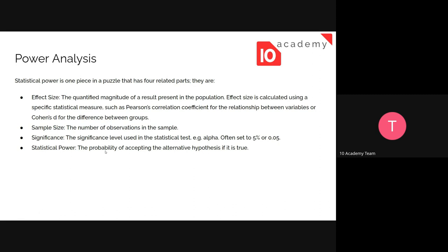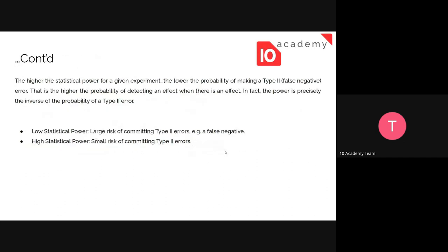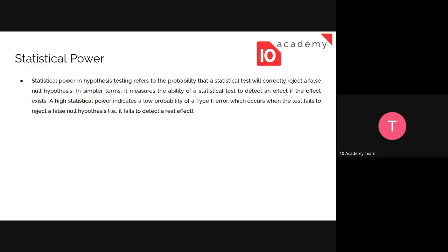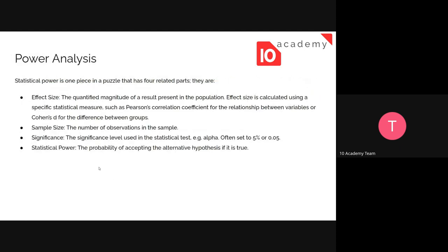Statistical power is the probability of accepting the alternative hypothesis if it is true — or in other terms, it refers to the probability that a statistical test will correctly reject a false null hypothesis. Those two descriptions are the same idea, just in different terms. At the end of the day, the point is to calculate a significant number or a good sample size for our hypothesis — and to know whether the hypothesis is right or wrong.